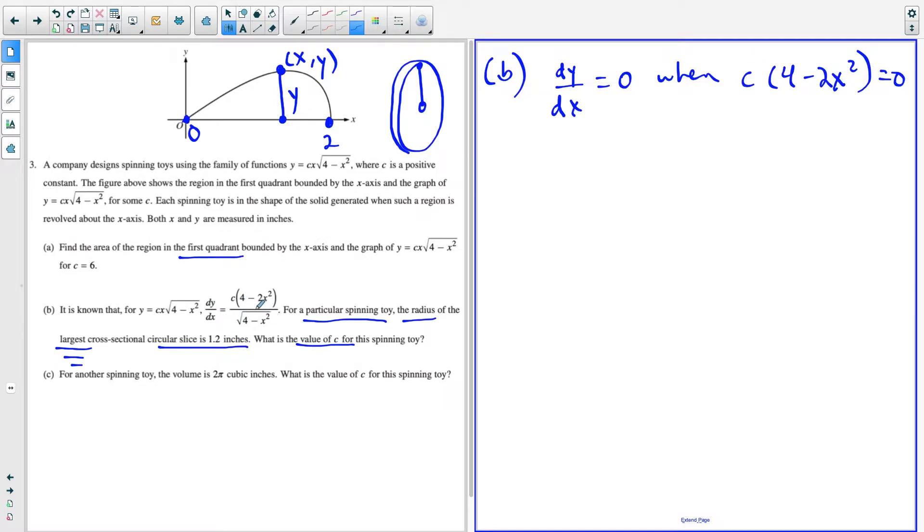So that's going to be when C times four minus two x squared is equal to zero. Remember, if you set the denominator equal to zero, that tells you where your curve is, where your derivative is undefined. But the numerator equal to zero tells you where it's equal to zero. So now C equals zero doesn't make sense, because that would just wipe out everything. So four minus two x squared is equal to zero when four is equal to two x squared, which is true when two is equal to x squared.